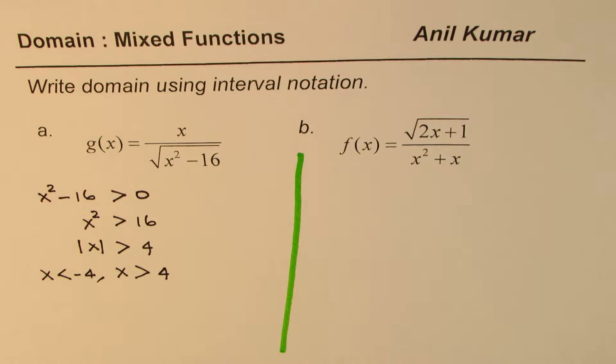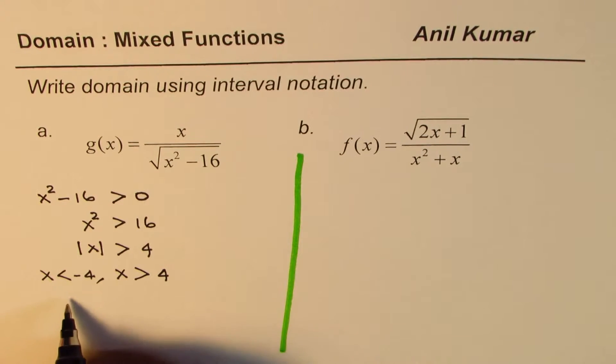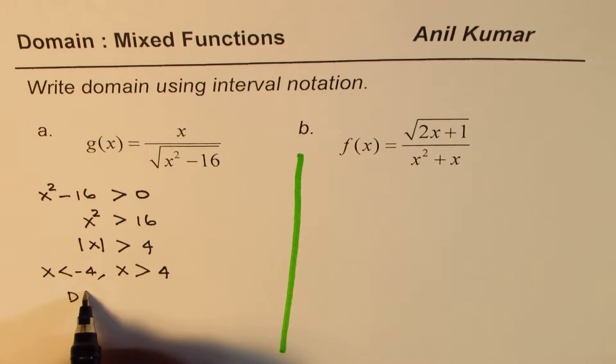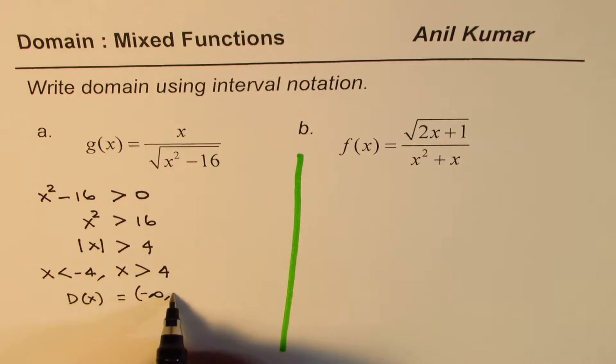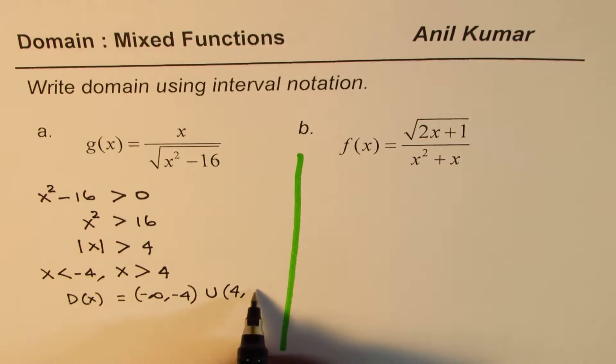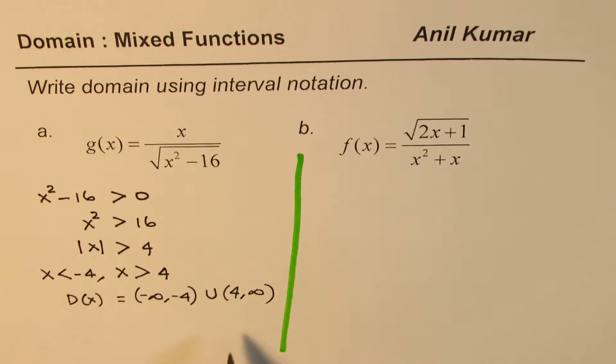So that becomes the possible values for x. That becomes the domain for the given function. The domain of g(x) in interval notation we write as from minus infinity to minus 4, union 4 to infinity.